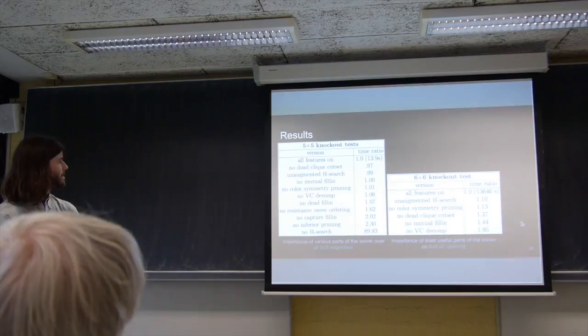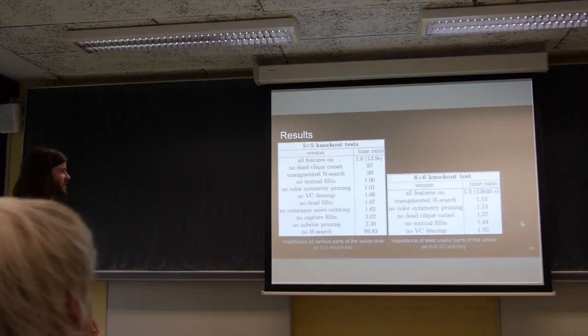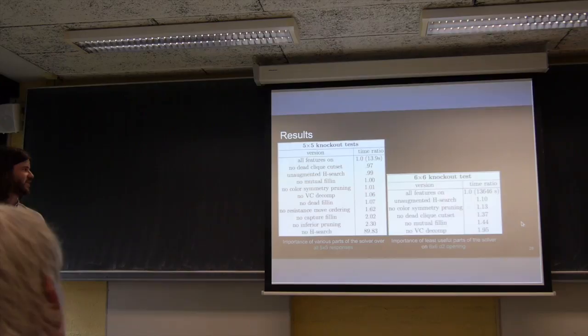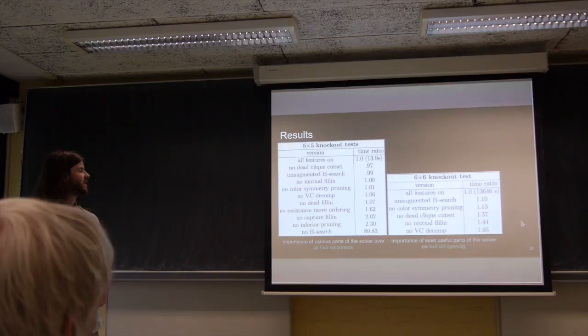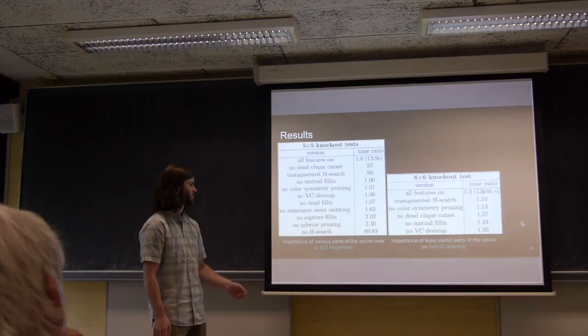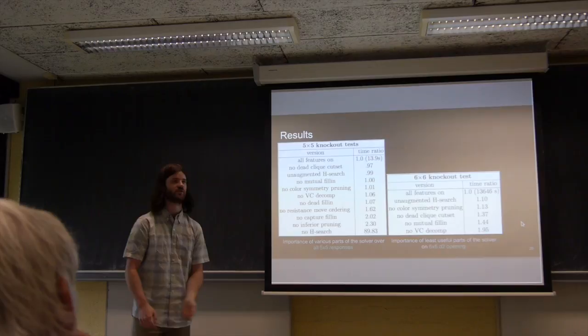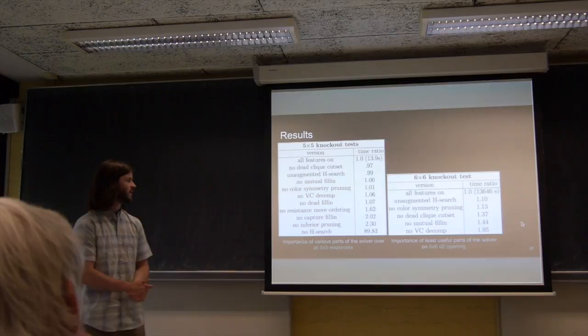Finally, we have knockout experiments, we call them. It's basically just every feature, turn it off, run it on some sample set, and see how fast the solver runs with that feature on versus with it off. So this is basically a measure of the importance of features. So we did this over all 5x5 responses, which takes 14 seconds to solve with all features on, so fairly fast. So a couple things you can see are really important. Obviously, H-search matters a lot, which is clear because you're using that for a lot of early cutoff in your search. You can prevent a ton of search by doing that. Inferior cell pruning, really important, obviously. Capture fill-in, also important. Resistance move ordering is quite important as well, so just the order in which you choose to initially search moves.